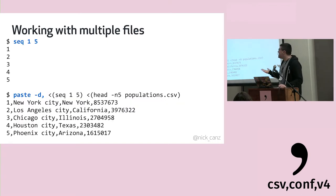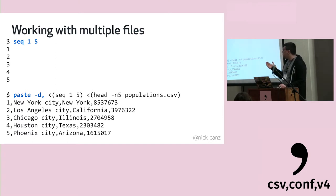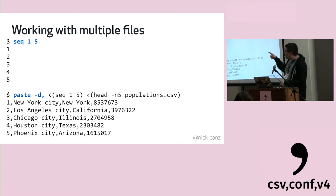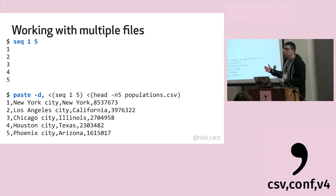A good example of 'paste': if you want to add a row number to each line of a file, 'seq' is a command that prints out one number per line. You can zip the output of 'seq' with your population CSV using paste, and the generated output has a number for each line.